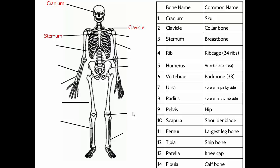In our arms and legs there's one large bone on top, and then the next section has two smaller bones. In the arms, the upper arm bone is the humerus. The two bones in your forearm are the ulna and the radius.